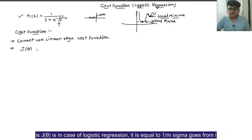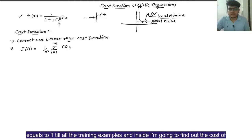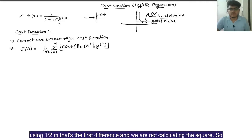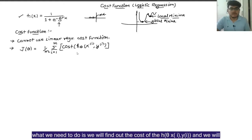The cost function J(θ) for logistic regression equals 1/m times the sigma from i=1 to m of the cost of h_θ(x_i), y_i. Notice the difference — we are not using 1/(2m) and we are not calculating the square. We find the cost of h_θ(x_i), y_i and we will get a curve that is not wavy.